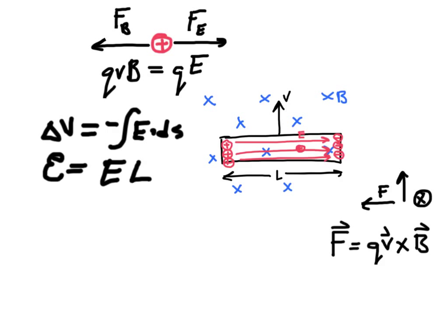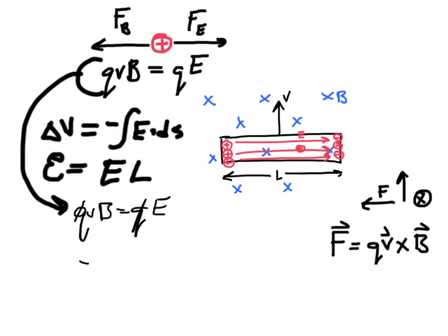Well, but we can find out what the E field is from up above. We can take this guy here and go like, okay, how much E field is that anyway? That is going to be QVB equals QE, and the Qs cancel, and so E is equal to VB.